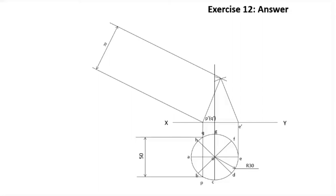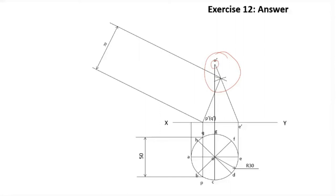From the side of E-dash we extend the triangular face upward. This portion is extended, and this point will be the apex. From here we find A-dash, then join A-dash with O-dash. This completes the front view of the cone.